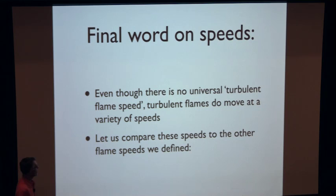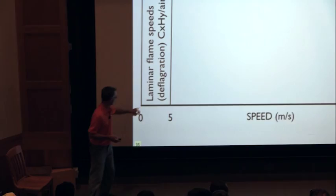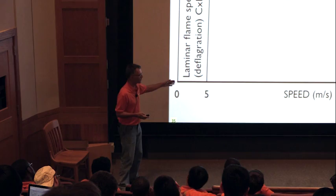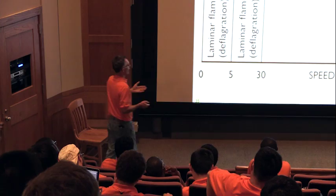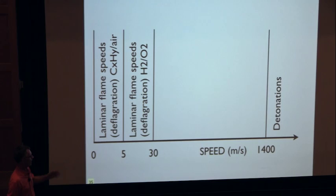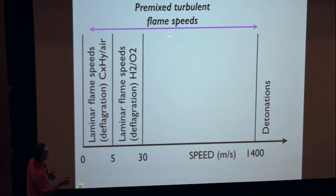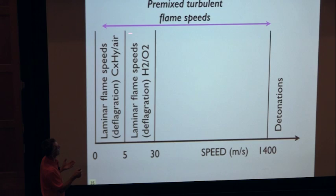To summarize flame speeds: for hydrocarbon flames in air, laminar flame speed is around half a meter per second; hydrogen flames can go up to 5 or 10 meters per second; hydrogen-oxygen at high pressure perhaps up to 30 meters per second. Beyond that, nothing laminar can go faster. At the other end of the spectrum you get detonations, which can go at one to one and a half kilometers per second. Turbulent flame speeds can spread across this whole domain. The transition from turbulent flame speed all the way up to detonation is called DDT — deflagration to detonation transition — and is usually due to turbulent flames.